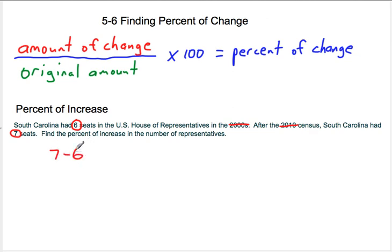To find the amount of change, just put the bigger number first, subtract the smaller number, and then we'll get whatever answer we'll get. So in this case, it's going to be one. On the bottom of the fraction is the original amount. Well, the original amount in this case is what they used to have, which was six seats. And so the amount of change was one. The original was six, and now we have to do some division to figure out the percent.